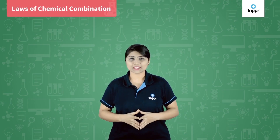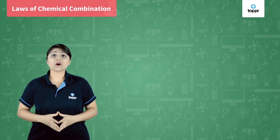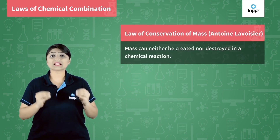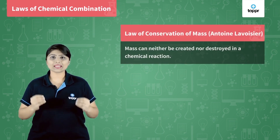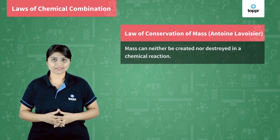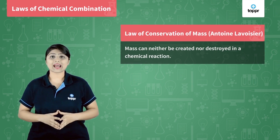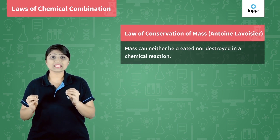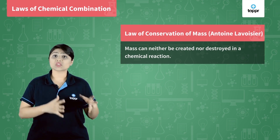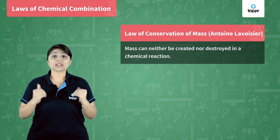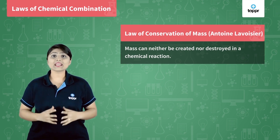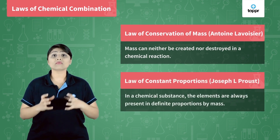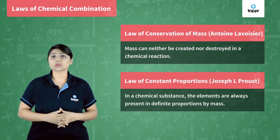Laws of chemical combination. The first law of chemical combination is the law of conservation of mass, which was given by Antoine L. Lavoisier. The law states that mass can neither be created nor be destroyed during a chemical reaction. The second law was known as the law of constant proportion.